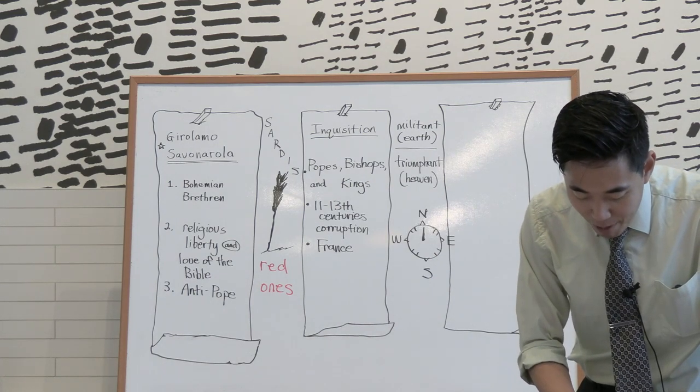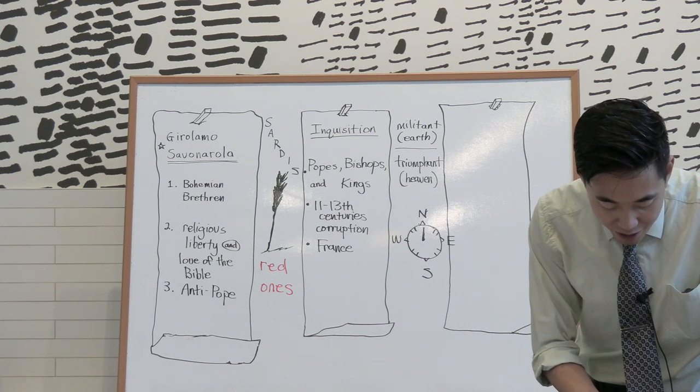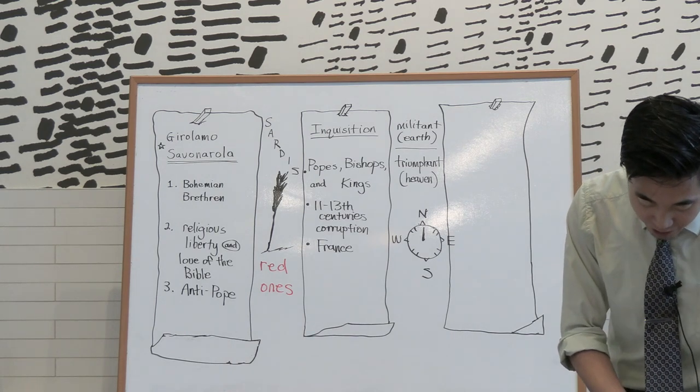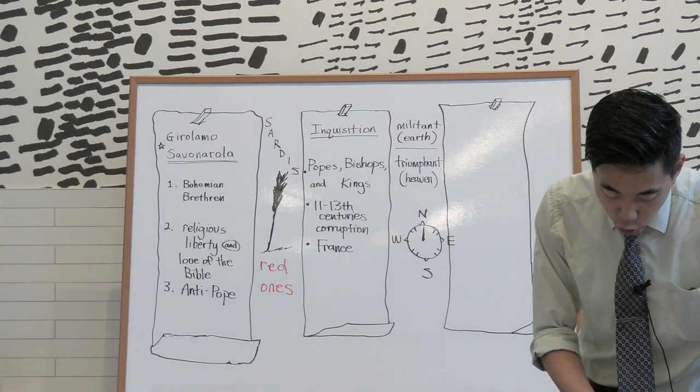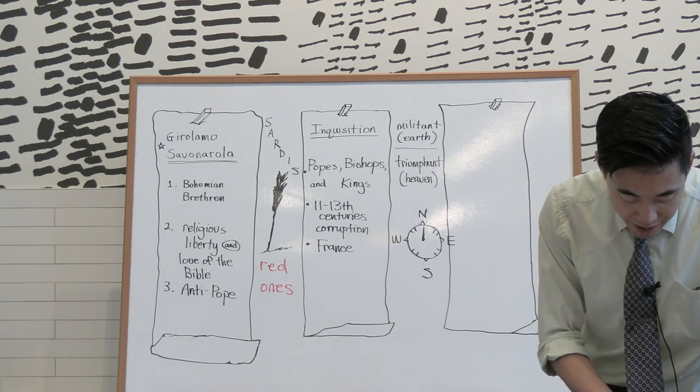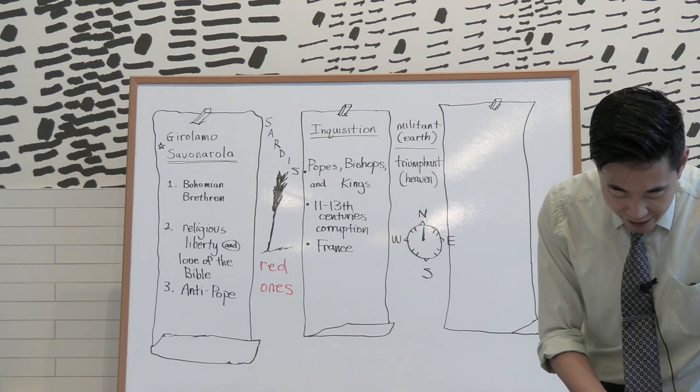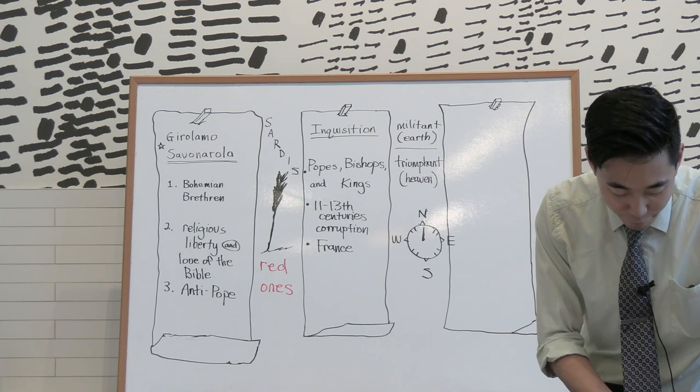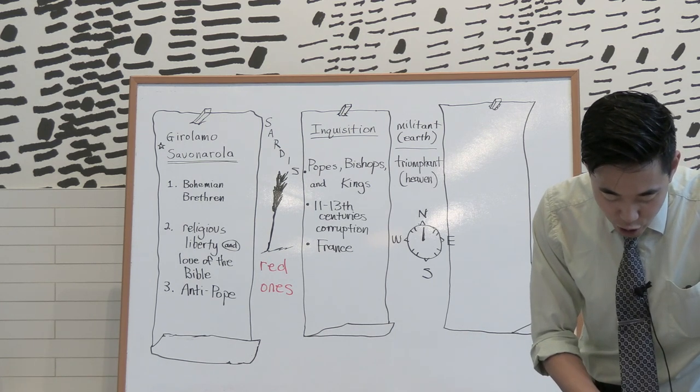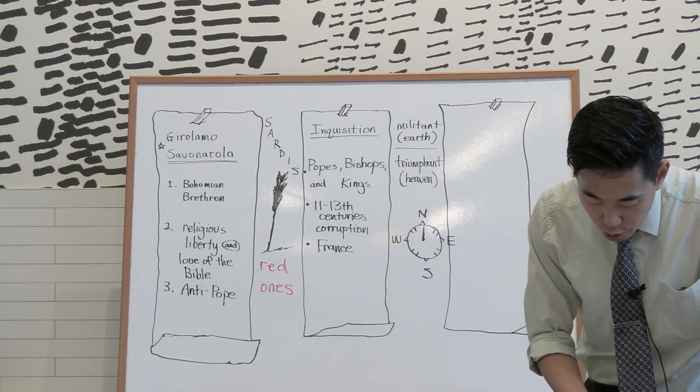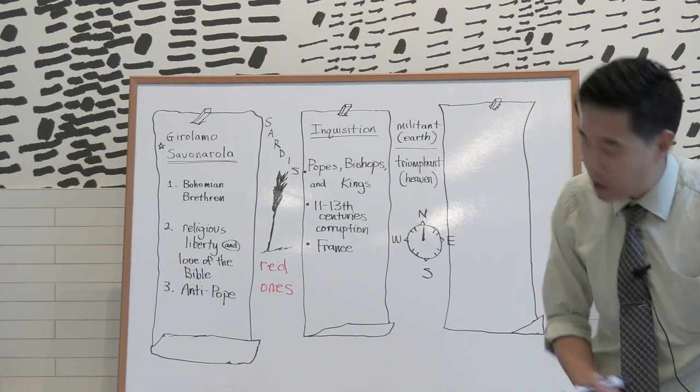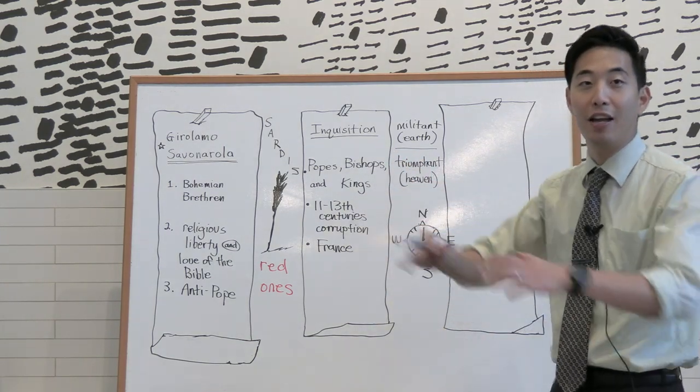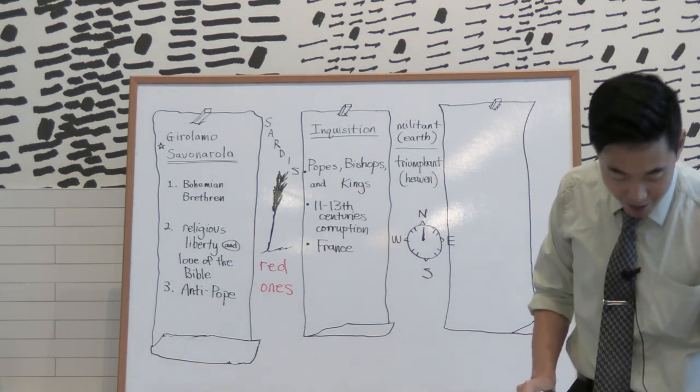It was under Clement V that the papal bull calling on the king of France to destroy the knights Templars was made. Pastor tells us that the move from the natural home of the popes of Rome to France was a disaster for the papacy. It is true that it was strange for the popes who had so been used to rebuking kings and princes were now almost subject to one.